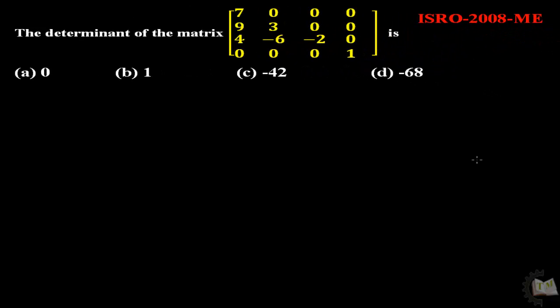Find the determinant of the matrix. This is a 4 by 4 which is a square matrix. How to find the determinant of the matrix?